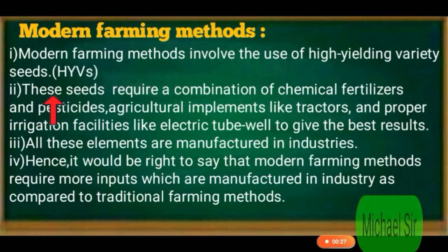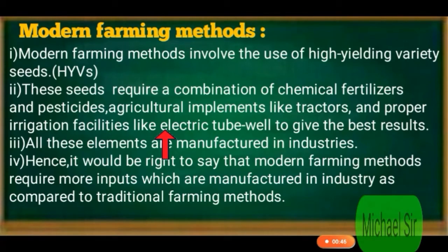Second: These seeds require a combination of chemical fertilizers and pesticides, agriculture implements like tractors, and proper irrigation facilities like electric tube wells to give the best result. Modern farming method में combination of chemicals and fertilizers, कीटनाशक दवाइयां, agriculture implements जैसे tractor, और proper irrigation facility जैसे electric tube well — इन सब की जरूरत पड़ती है।